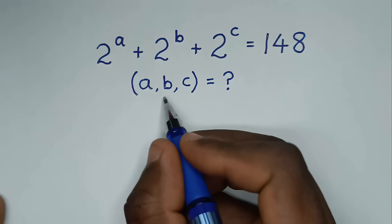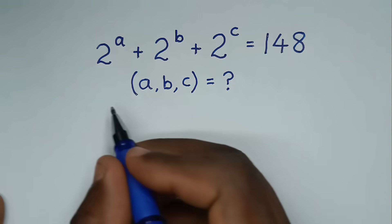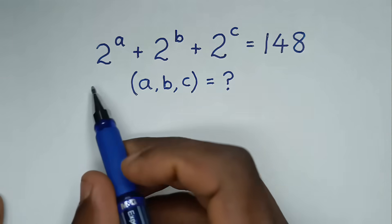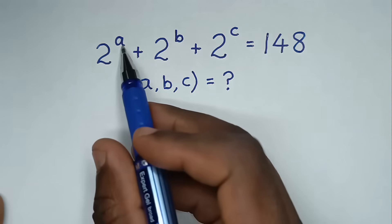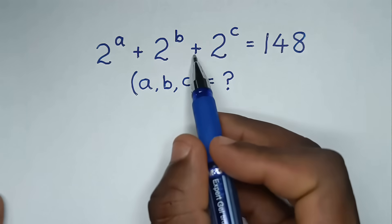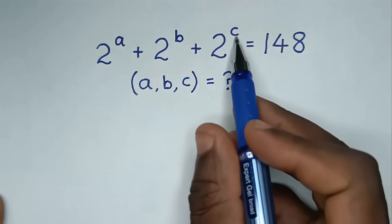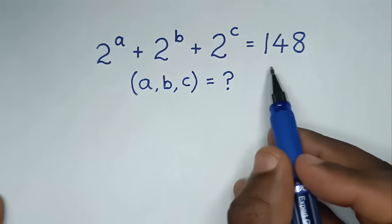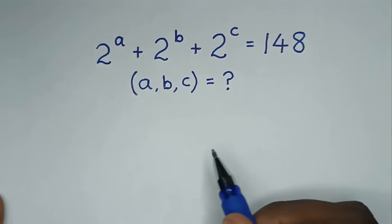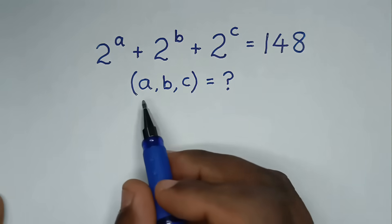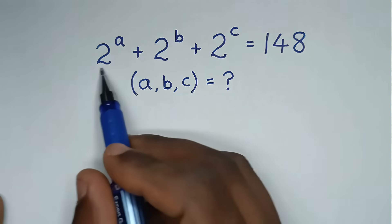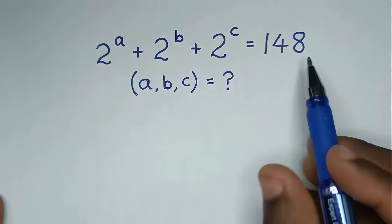Hello, you are welcome to solve this math problem, which is: 2 power of A plus 2 power of B plus 2 power of C is equal to 148 — to find the value of A, B, C from this equation.